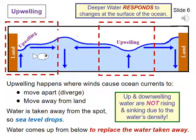Upwelling water is cold, since it is water from deeper in the ocean. Cold water does not want to rise, because it has a higher density than the water at the surface. Ocean currents have to force the water to rise by taking away the surface water and creating a hole in the surface. If the ocean currents stop or change direction, the cold upwelled water will sink back down again. Upwelling can also occur when an ocean current runs into an underwater hill — a sea mount — and is forced up and over it. Other causes of upwelling exist beyond those discussed here.